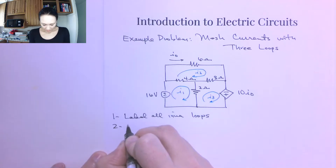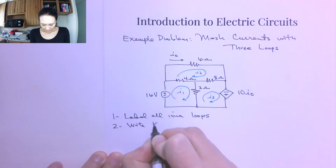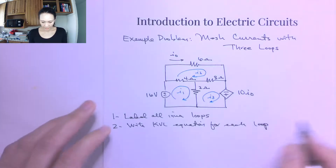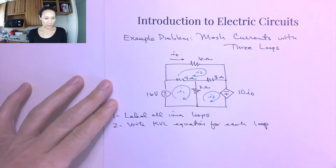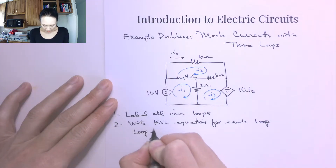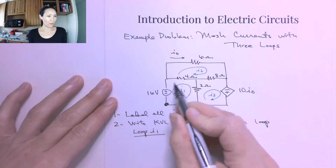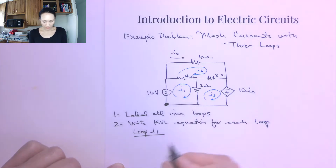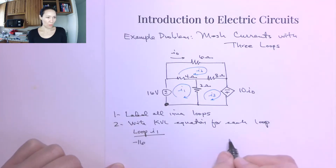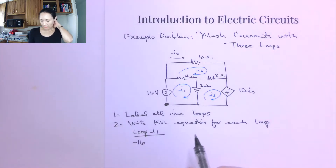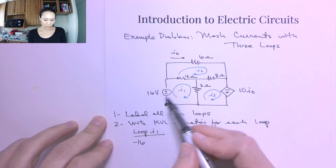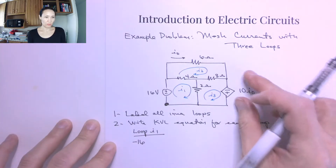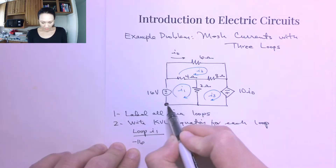Step number two is we're going to write the KVL equation for each loop — the sum of voltages around the loop is equal to zero. At loop I1, if I start here in this corner and walk around, the first thing I encounter is this 16 volt source. Since I'm entering through the negative terminal, I'm going to call this negative 16 volts in my equation, using the passive sign convention.